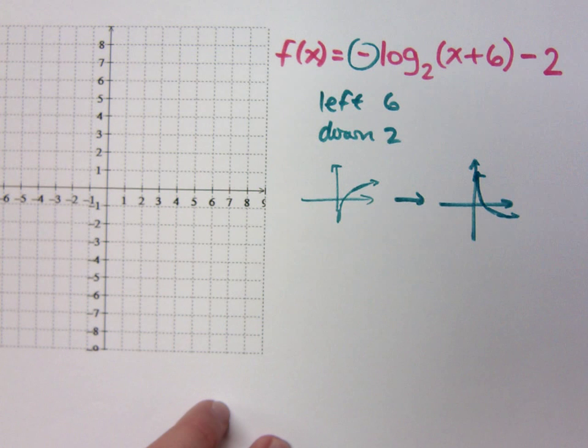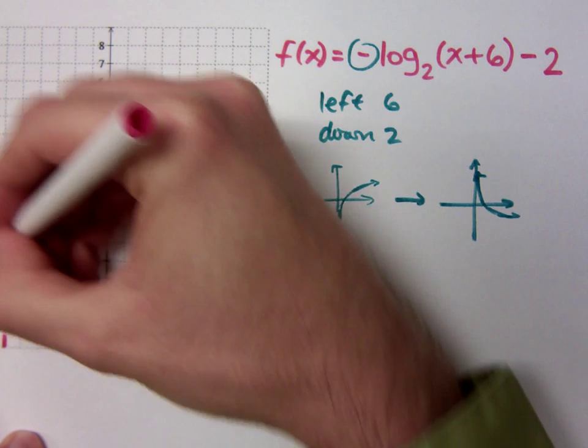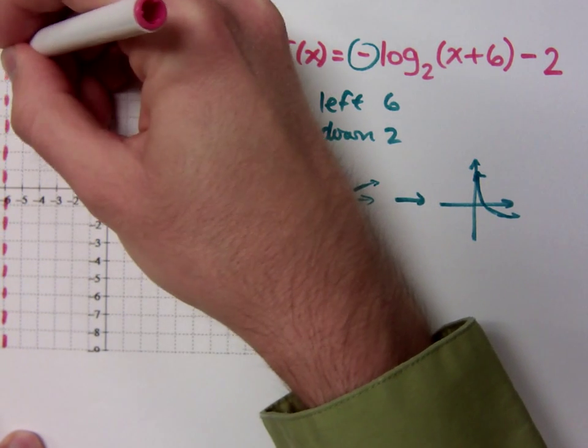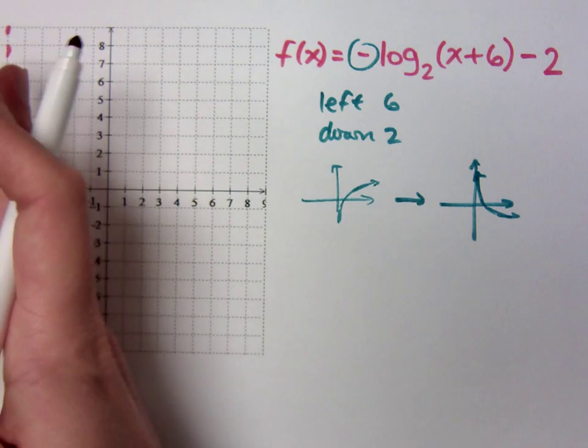Oh wait, but they're not the inverse of each other. It's not the inverse, it's reflected across. It's not inverse, it's reflection. Okay. Where is your vertical asymptote? Let's start there. Negative six. X equals negative six. All right.